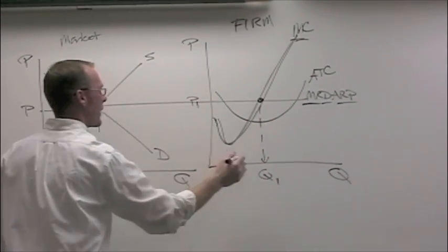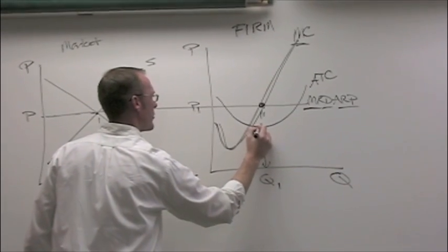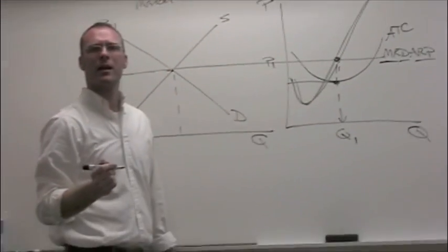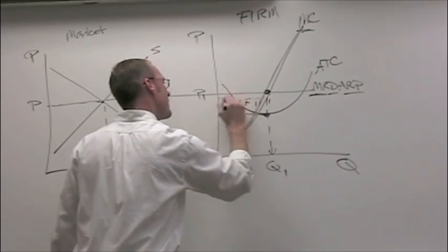Go down from there to ATC and then just square it in. Profit, just shade it in.